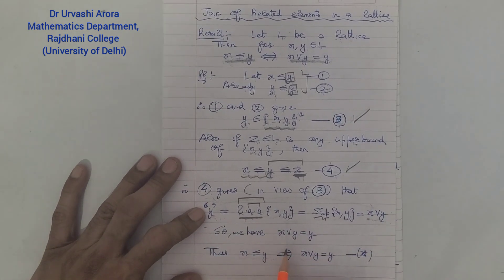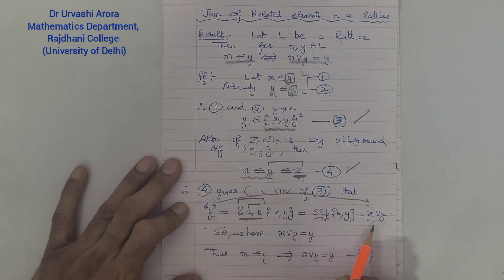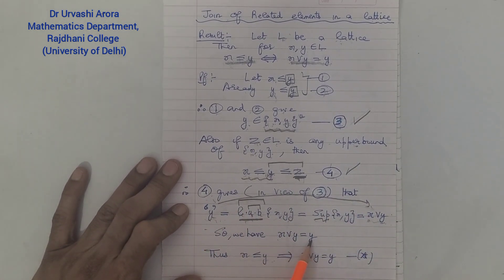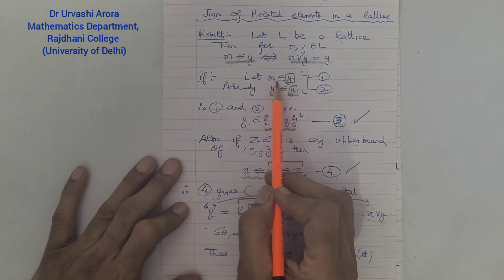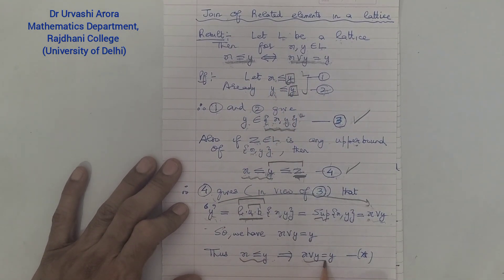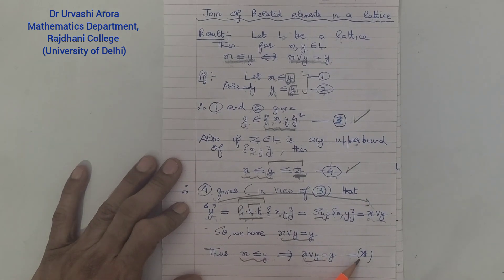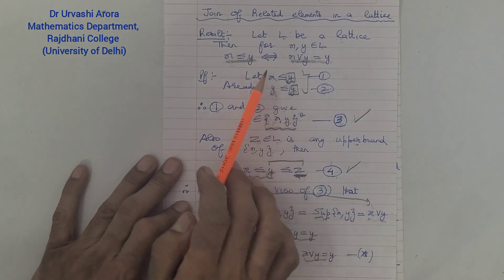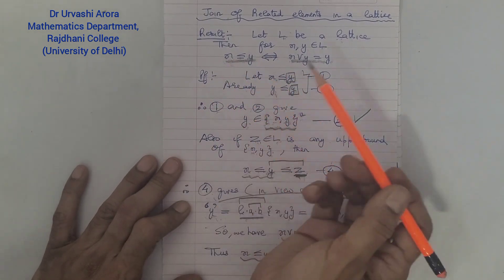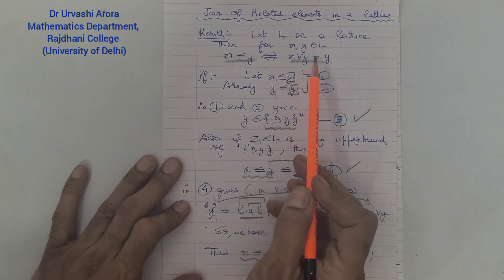Since y is an upper bound and lesser than any other upper bound of x and y, y is the least upper bound, or supremum, of x and y. Using join notation: y is the join of x and y, so x join y equals y. We started with x ≤ y and derived that x join y = y. This is one-way implication, marked as (★).